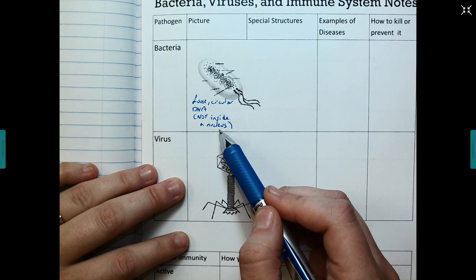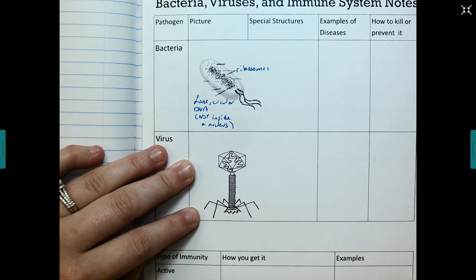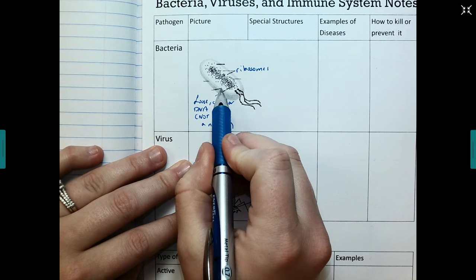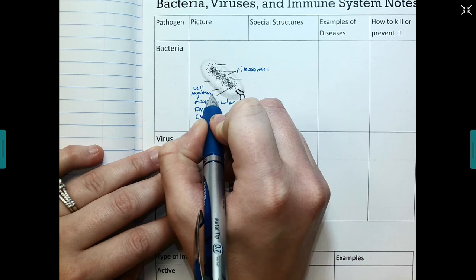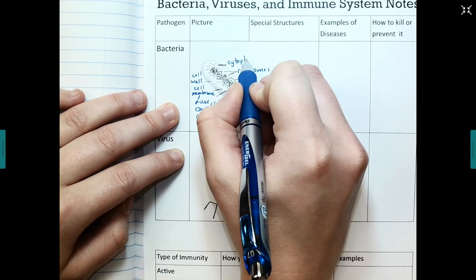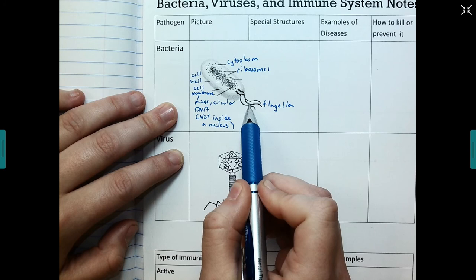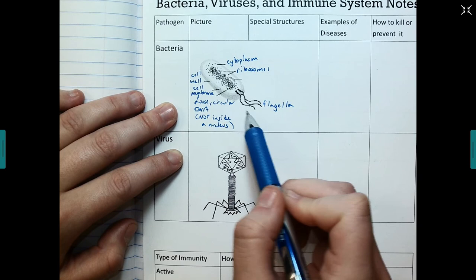Number two here are ribosomes, those little black dots around here. Remember, ribosomes make proteins. So ribosomes are essential for all cells. Number three here, this is the cell membrane. This line right here is the cell wall. Right here, we have cytoplasm. And then down here, we have the flagella. Now, remember, not all bacteria have a flagella. For movement, some bacteria can have cilia, which are the little hair-like projections. So bacteria can have flagella or cilia. So those are our structures.